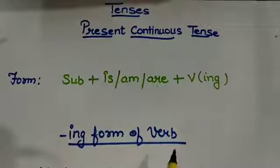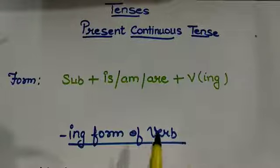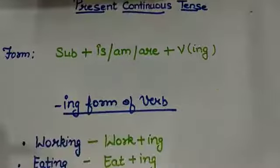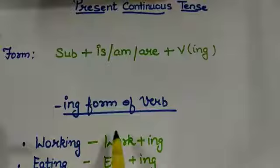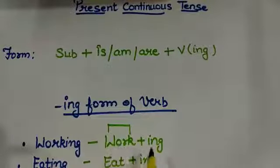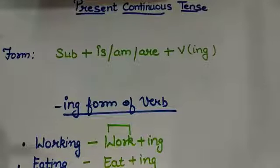Now, ing form of a verb is very important because it is representing the continuity of the tense. See, verbs like working are made up of the main verb work and ing to represent the continuity of the verb. So there can be many verbs like this: working, eating, learning, sleeping, so many verbs are possible.